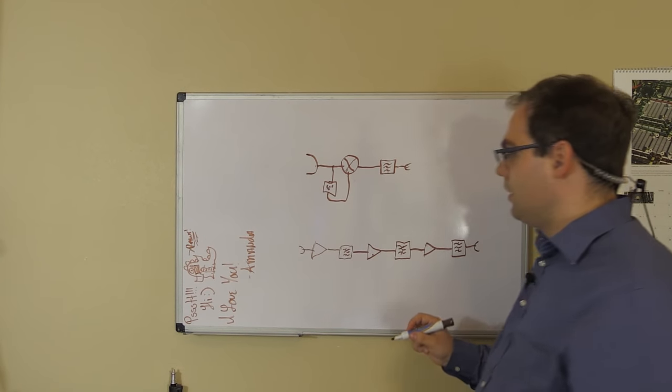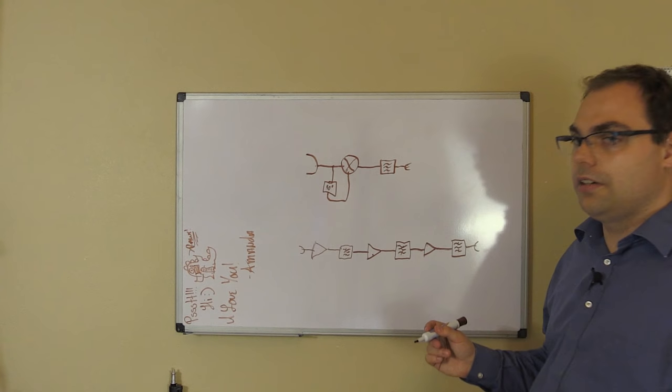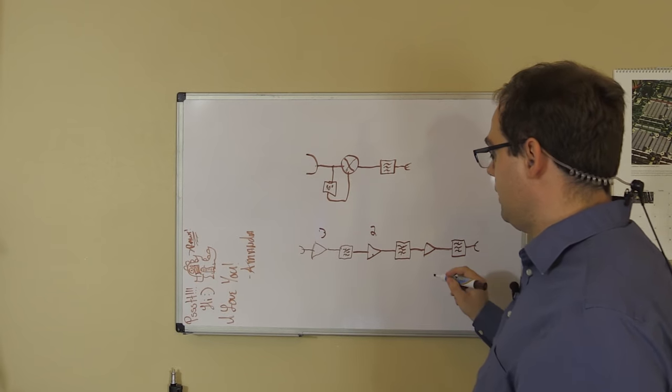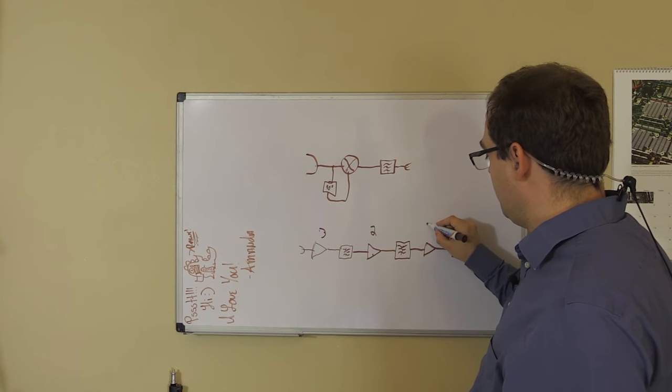So two times three is six, and then we multiply times two.